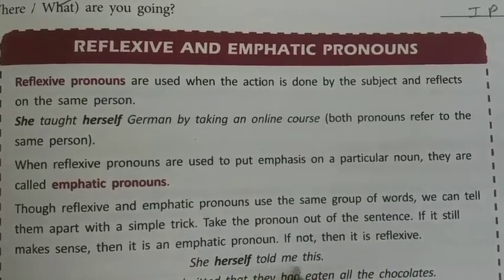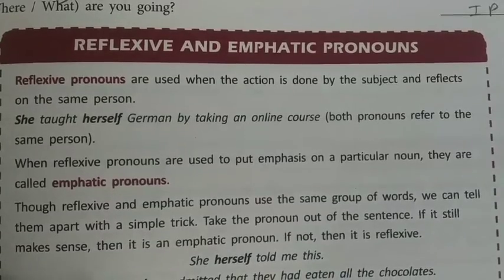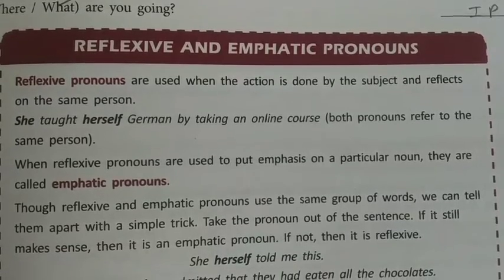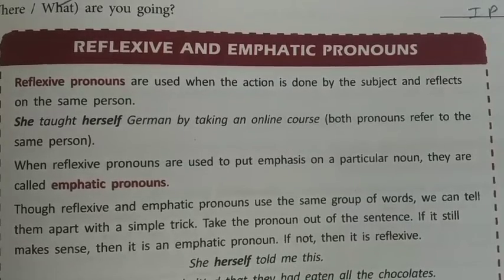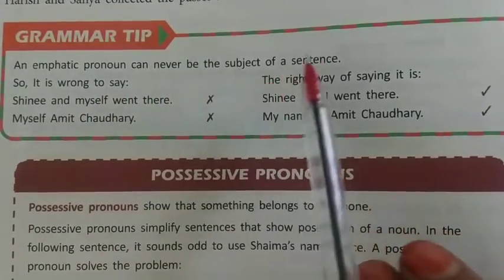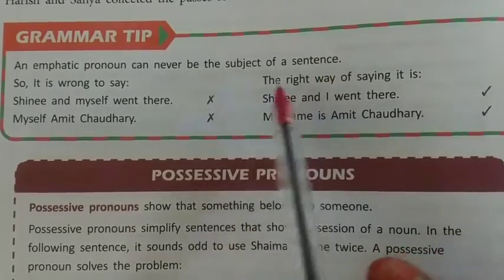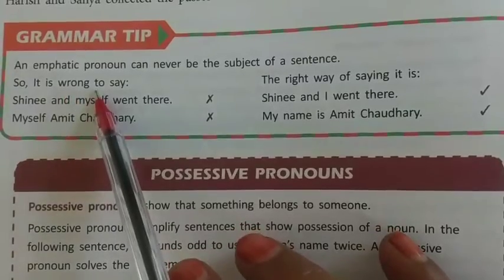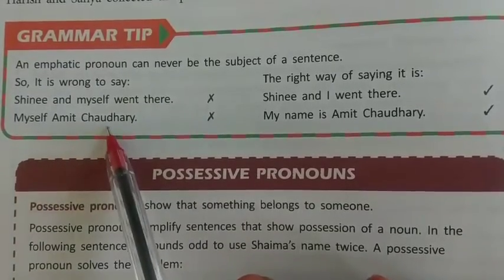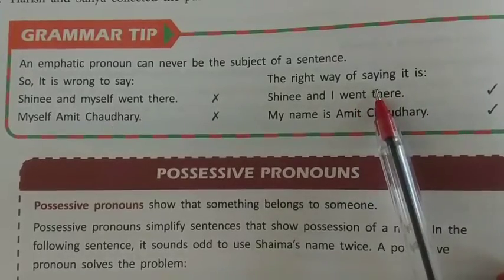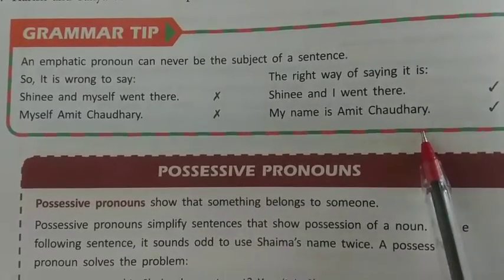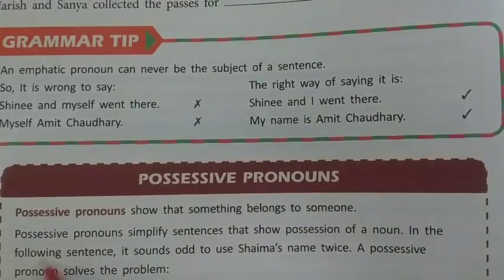'She herself told me this.' 'They themselves admitted that they had eaten all the chocolates.' 'We ourselves witnessed the accident.' An emphatic pronoun can never be the subject of a sentence. So it is wrong to say 'Shreeni and myself went there' or 'Myself Amit Chaudhary.' The correct forms are 'Shreeni and I went there' and 'My name is Amit Chaudhary.'